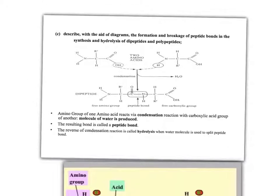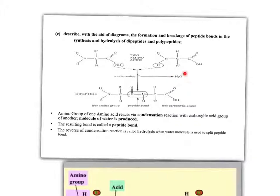The next slide looks at how amino acids join together to form dipeptides and polypeptides. The bonds are called peptide bonds. A dipeptide is simply two amino acids joined together, and they do so by a condensation reaction. A condensation reaction produces a molecule of water — we strip out two hydrogens and an oxygen.